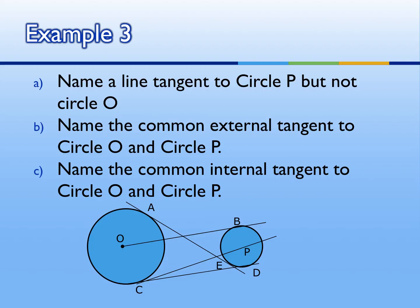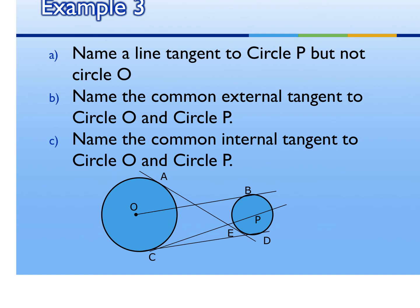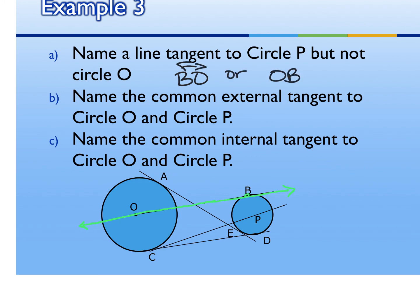They want us to name a line tangent to circle P but not circle O. The tangent line needs to skim along the outside of the circle. One line is tangent to P but if extended it's also tangent to O so that doesn't work. The other line would keep going and become a secant for O. The one that is tangent to P but not O is line BO, or we could reverse the letters to OB. Make sure you include the line symbol on top.